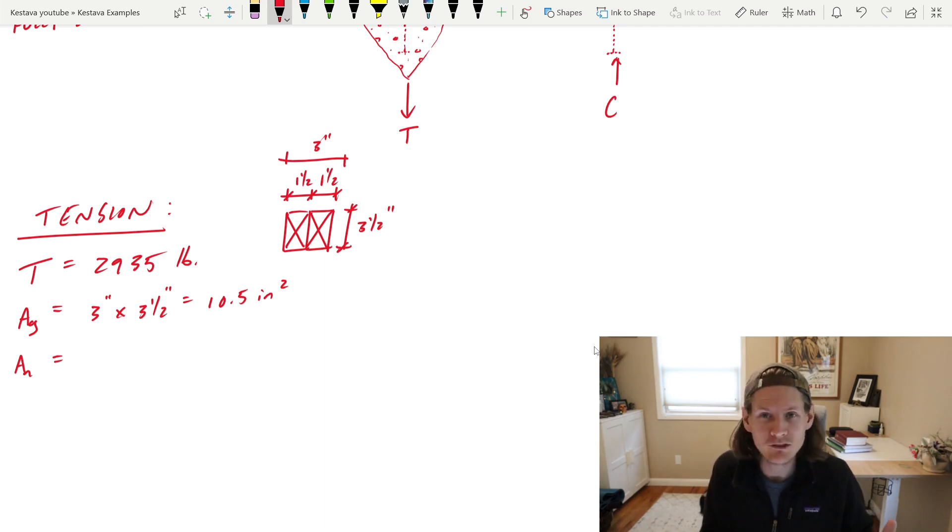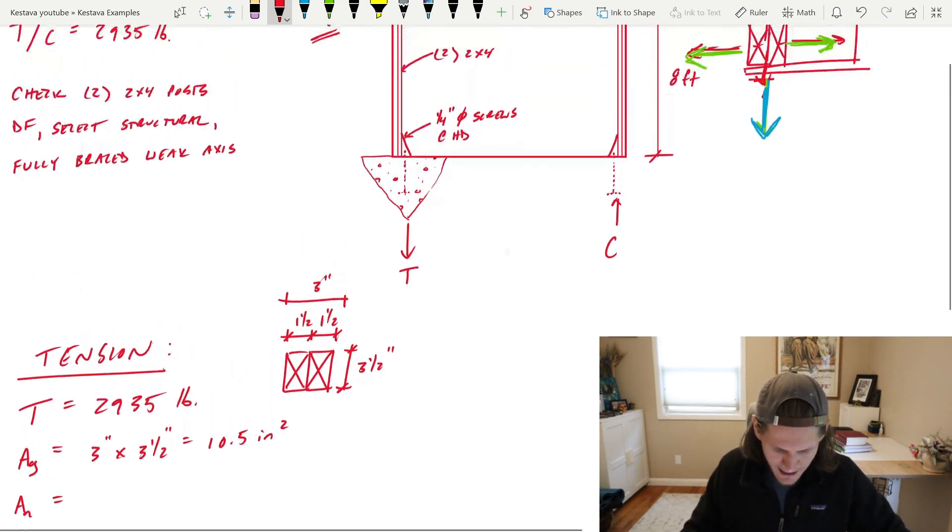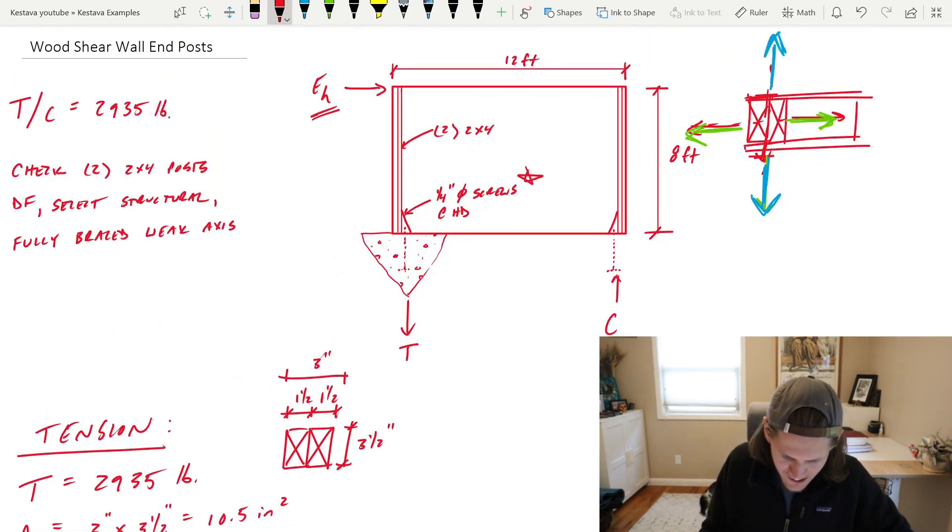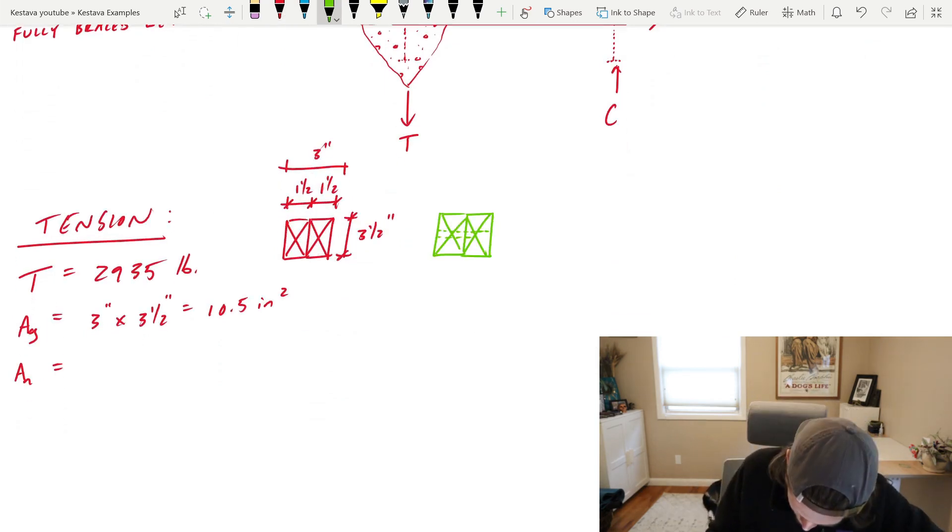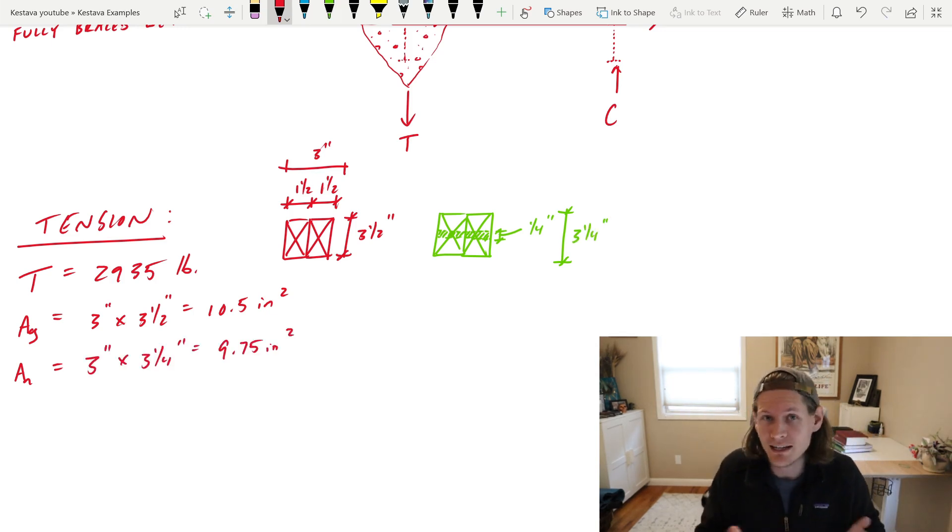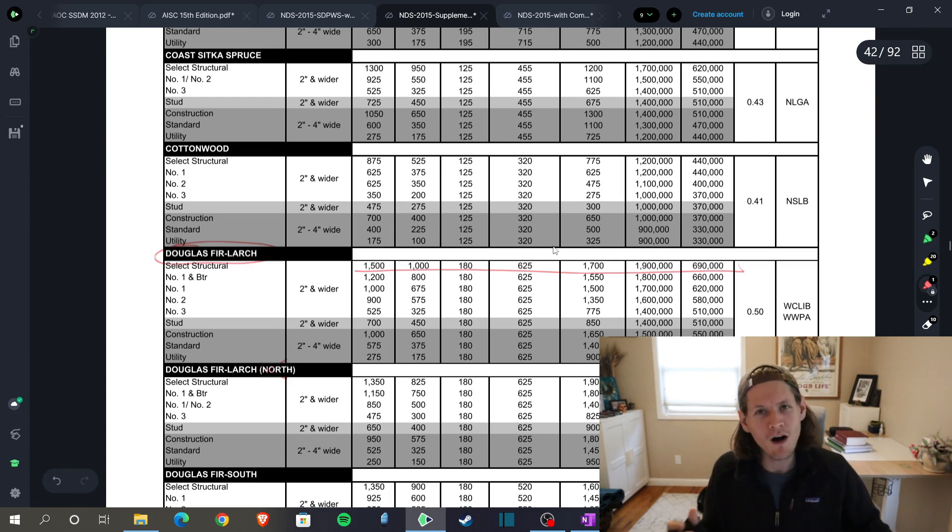Basically, you get your net section by deducting from the gross section area that we calculated, the projected area of all material removed by boring, grooving, dapping, notching, or other means. Something I did add here is for the connection of the hold down itself, I'm stating that we have one quarter inch diameter screws that are connecting the hold down into the bottom of your post. So that's going to be a little chunk of meat that's coming out of that cross section. AG is 10.5 inches squared, and AN is 9.75 inches squared.